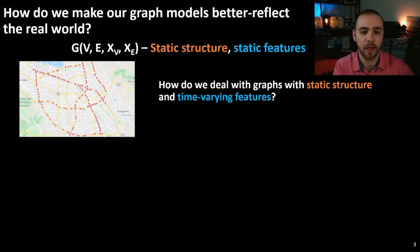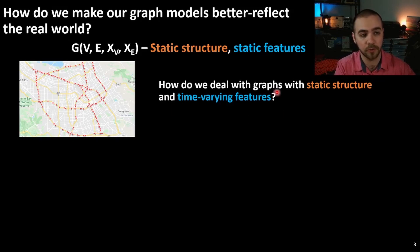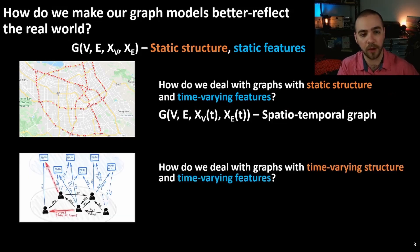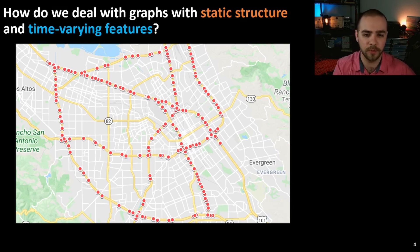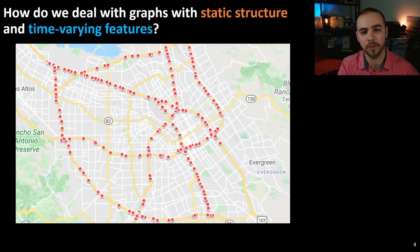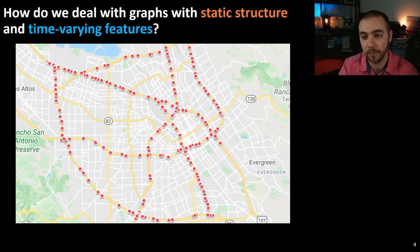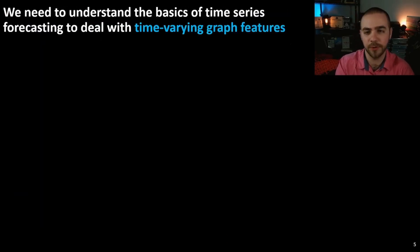We're somewhat limited with static structure and static features, so we might want to allow them to vary over time. One question is: how do we deal with a graph that has a static structure and time-varying features? In this case, we're sampling our features over time — this is what's known as a spatiotemporal graph. These types of graphs are surprisingly common. For example, in a road network, individual road segments are nodes and connections between them are edges. That graph won't change much over time, but the amount of traffic on each segment will — and that's exactly what we want to capture with a time-varying feature matrix.